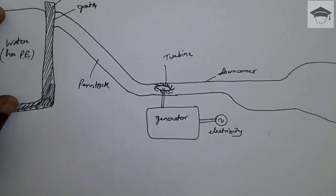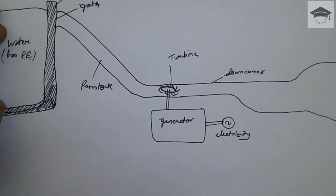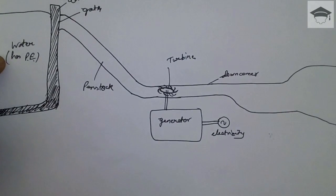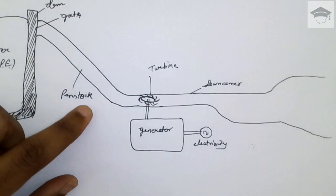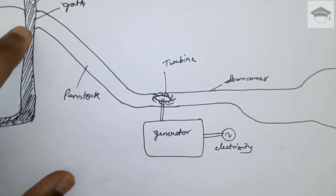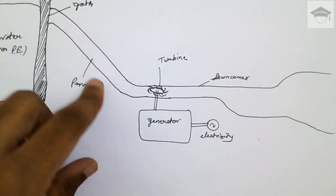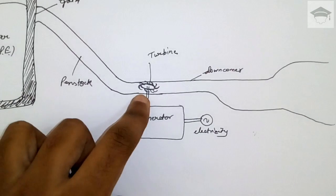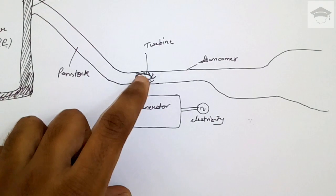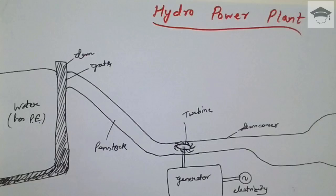Here a turbine is placed, and the water which flows rapidly from upstream to downstream via the penstock rotates this turbine. This turbine is coupled with a generator.